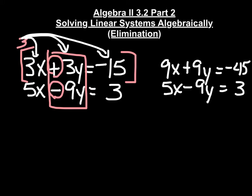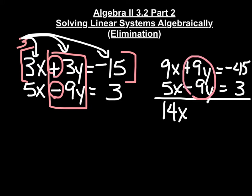Now if we add these two equations together, we have our x's lined up — 9x plus 5x is 14x. We have positive 9y and negative 9y, so those eliminate; they cancel each other out. That was the whole purpose of multiplying the first equation by 3 — to get the coefficient of y to be positive 9, matching the negative 9 in the second equation. So those eliminate, and that equals negative 42.